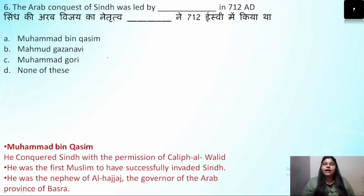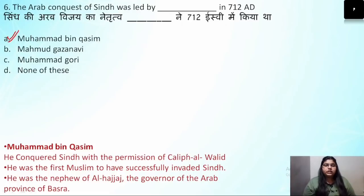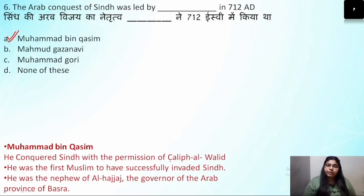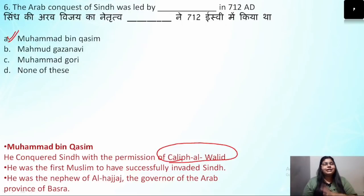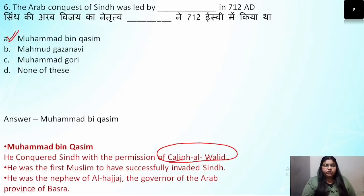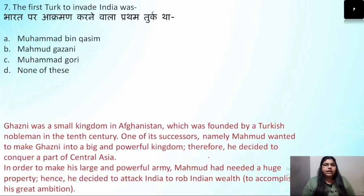Question number 6: The Arab conquest of Sindh was led by — easy question — the correct answer is Muhammad bin Qasim. The first attack on Sindh was in 712 AD. Khalif Al-Walid of the Umayyad dynasty gave permission. The first successful Muslim invasion was by Muhammad bin Qasim, who was the nephew of Al-Hajjaj, governor of the Arab province of Basra.